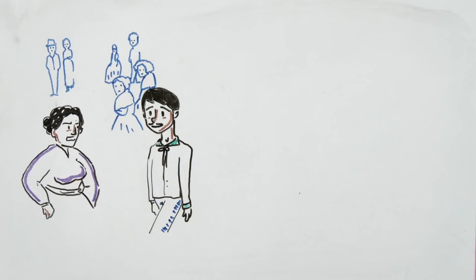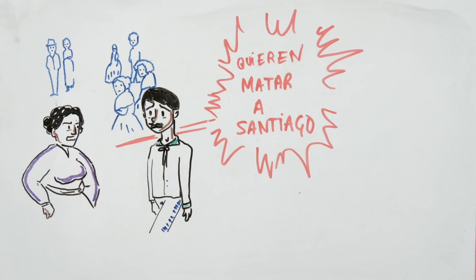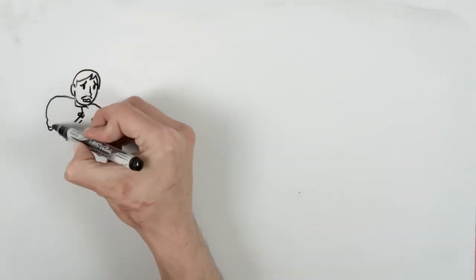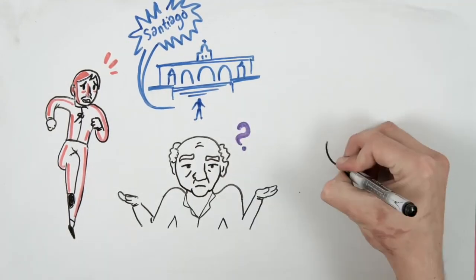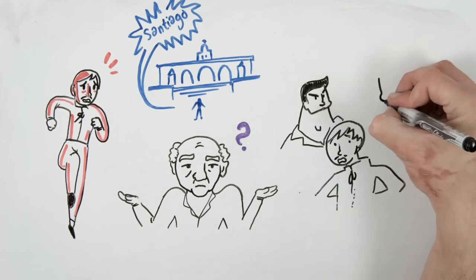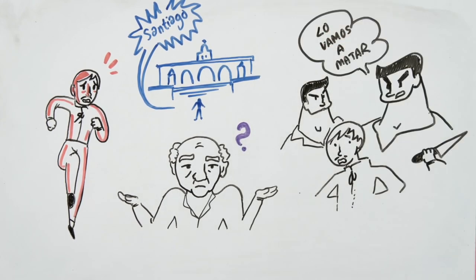When Santiago was no longer with Cristo, they told him about the plans of the Vicario brothers. Cristo ran to look for his friend at his house, but he was not there. He kept looking for him on the streets, but no one had seen him. He met the Vicario brothers, who told him they were going to kill his friend, and with this threat, he ran to look for him.